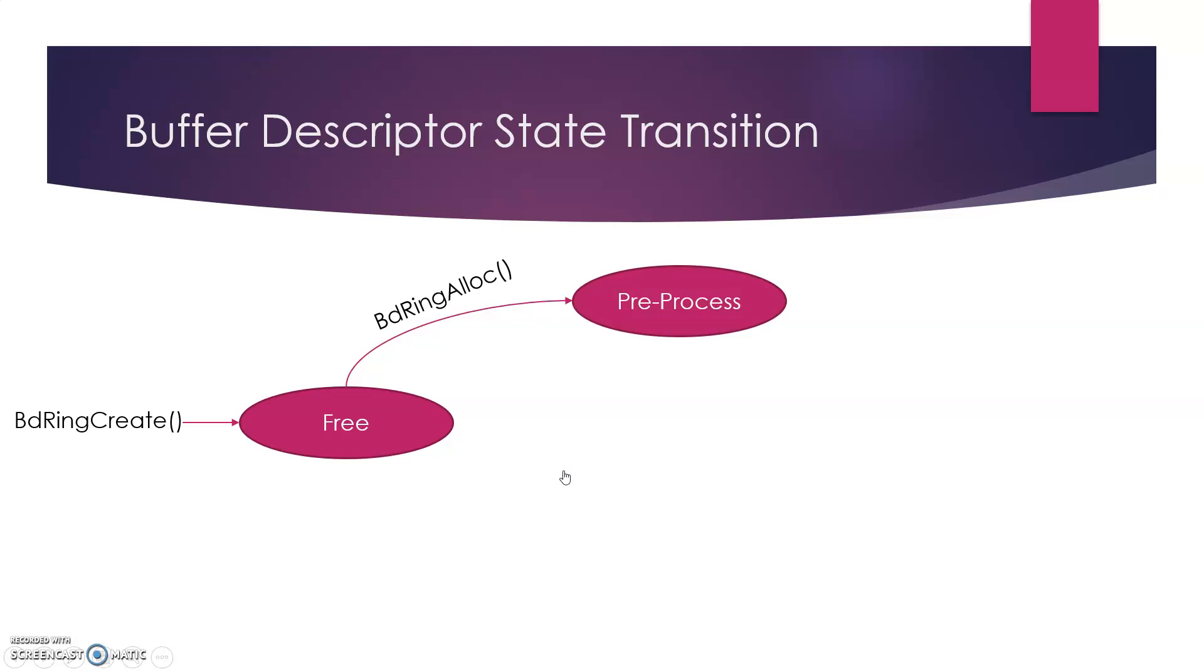This function allows the application to gain control over the buffer descriptors. And then they transition into the pre-process or pre-work state. The application can configure them, for example, by specifying the buffer address and other entries which were discussed previously.